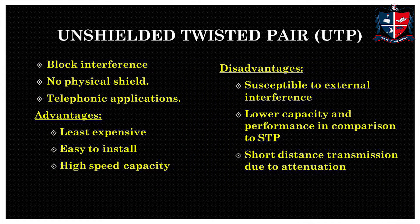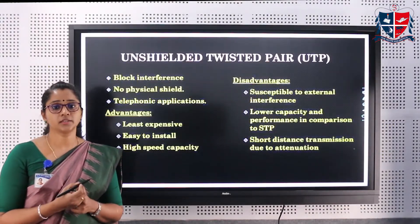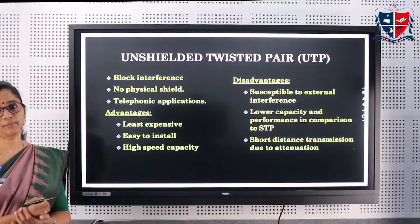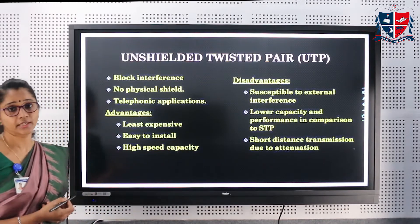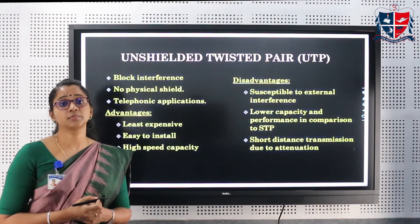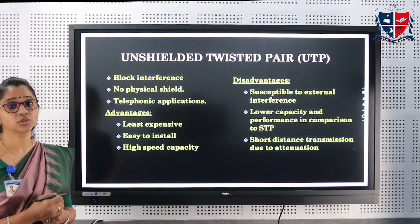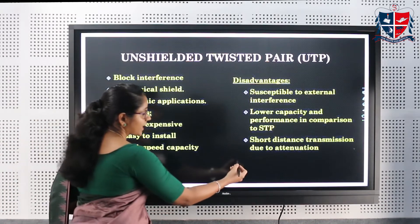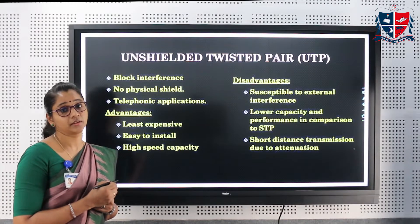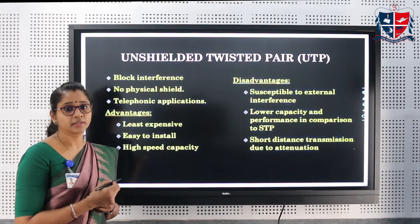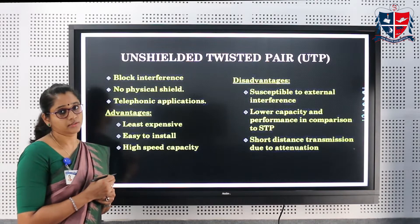Unshielded twisted pair, or UTP, has the feature of blocking interference but has no protective shield. It is commonly used for running telephonic applications. The disadvantage is that UTP is susceptible to external interference, because it doesn't have any shielding to protect from external interference. Because of that reason, it is used for small or short distance transmission, as external interference can weaken the signals.